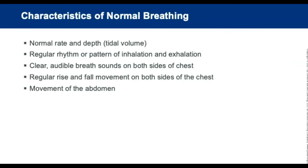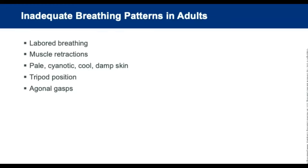Normal breathing characteristics include normal rate and depth, normal tidal volume, regular rhythm of inhalation and exhalation, clear audible breath sounds bilaterally, regular rise and fall on both sides of the chest, and movement of the abdomen. Inadequate breathing patterns include labored breathing, rate slower than 12 or more than 20 per minute, muscle retractions above the clavicles, between the ribs or below the rib cage, pale or cyanotic skin, cool damp skin, or the tripod position.